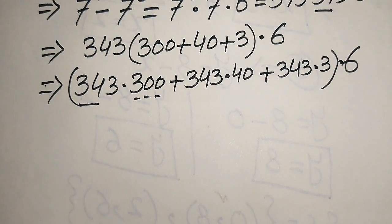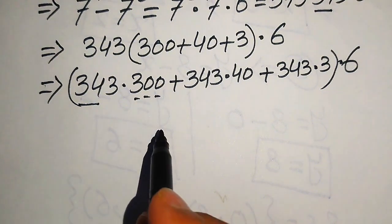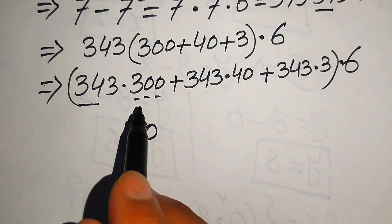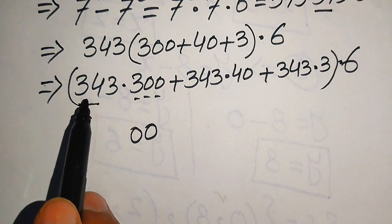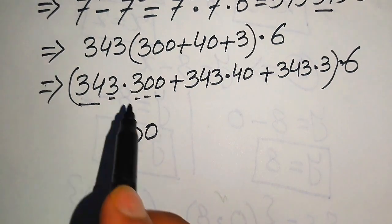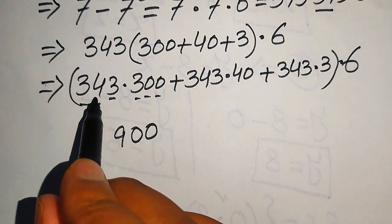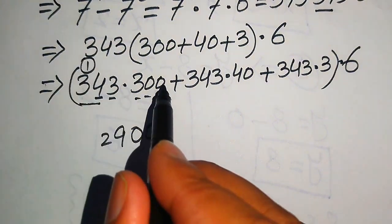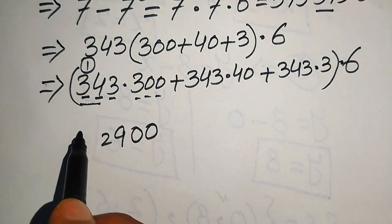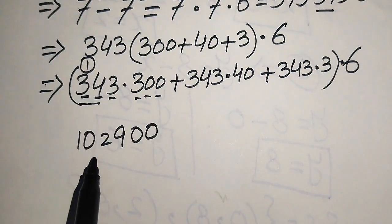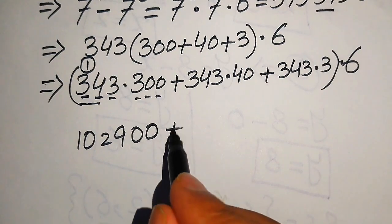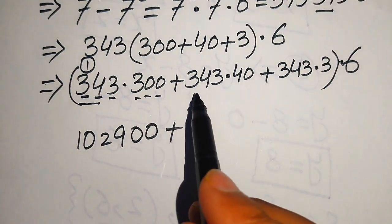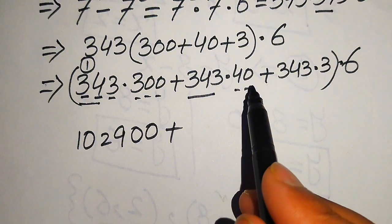First we multiply 343 by 300. We treat 300 as having a one-digit multiplier of 3 with two trailing zeros. Multiplying 0 with any number gives 0, so the last two digits are 00. Then 3 times 3 is 9, 3 times 4 is 12 — write 2 carry 1 — 3 times 3 is 9, plus 1 is 10. So 343 times 300 equals 102,900.